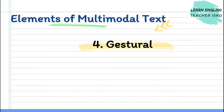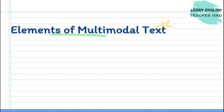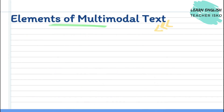Gestural is the fourth element of multi-modal text. Gestural includes movement, facial expression, and body language. In simplest terms, gestural mode refers to the way movement is interpreted.